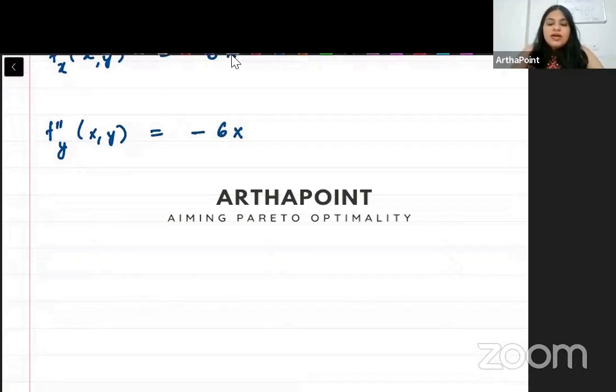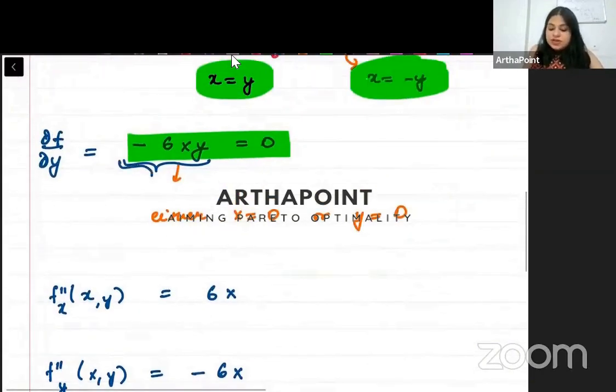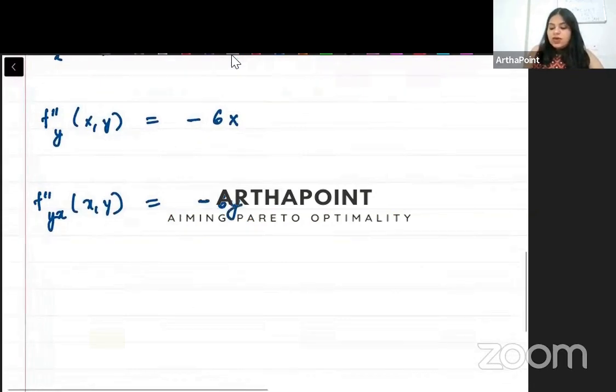And when I cross differentiate - first it was with respect to x and now with respect to y - if I differentiate this with respect to y, I will get minus 6y.